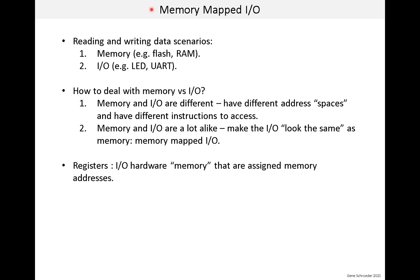Now let's talk about memory mapped I/O. When reading and writing data within a computer, you might think of two scenarios. Scenario one is reading or writing memory used to store data — for example, reading program instructions from flash memory as you execute the program, or writing the value of a variable into RAM and later reading it back. The second scenario is reading or writing something more physical than memory, so we use the term I/O for this. When you write I/O, you're not trying to store data; instead, you are trying to do something more physical.